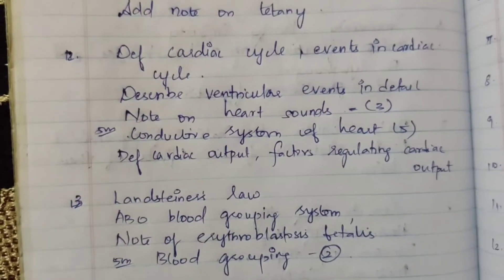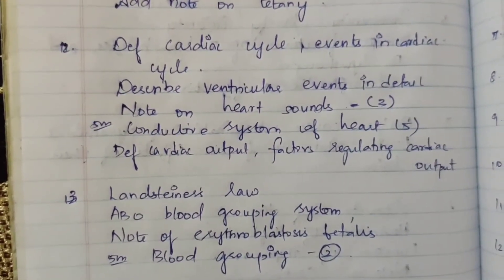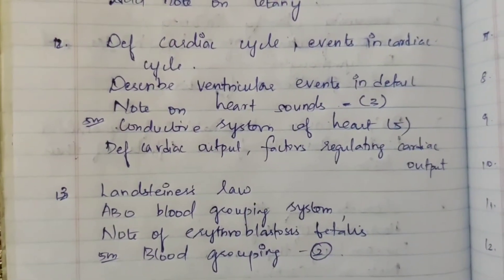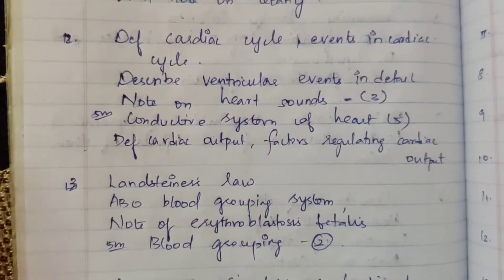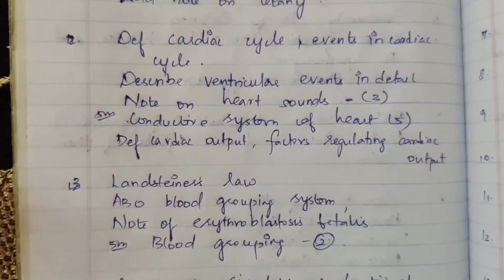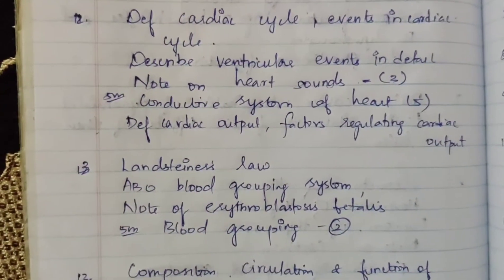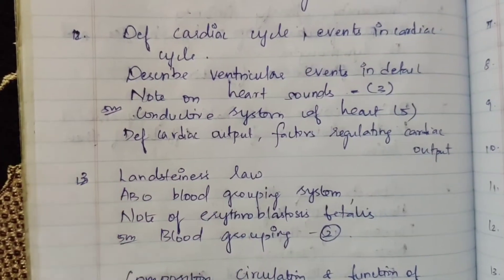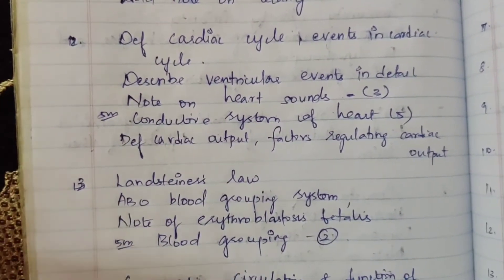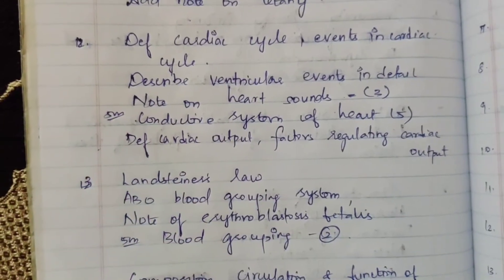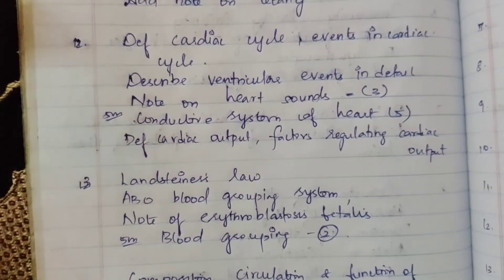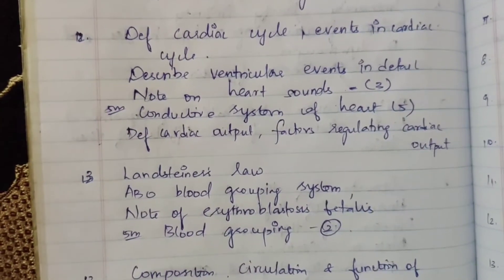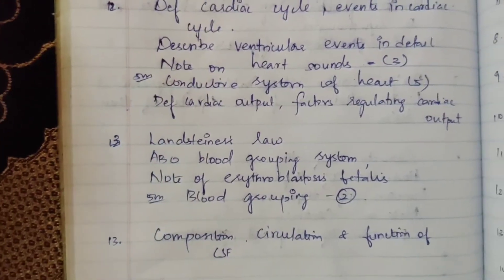Twelfth question: cardiac cycle — events in the cardiac cycle, describe ventricular events in detail, and note on heart sounds. Heart sounds question appears three times total, at both 5 marks and 15 marks. Conductive system of the heart appears five times. The cardiac cycle and conductive system of the heart are closely related topics and frequently examined.